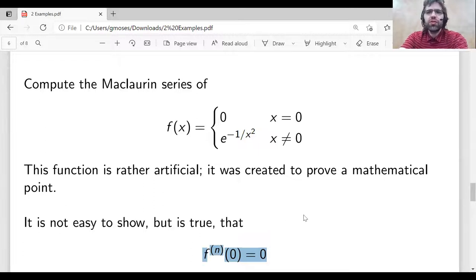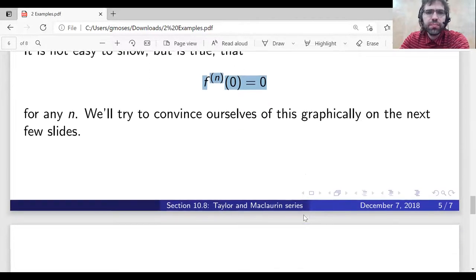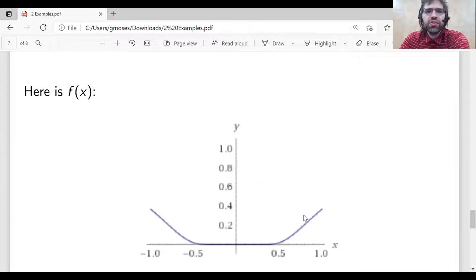Let's try to convince ourselves of this fact graphically. Here is the function. What is the derivative at 0? Well, it certainly seems plausible given how close to being a horizontal line segment the function is here. It certainly seems plausible that the derivative at x equals 0 is 0.